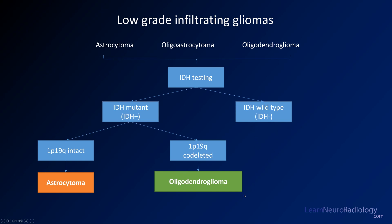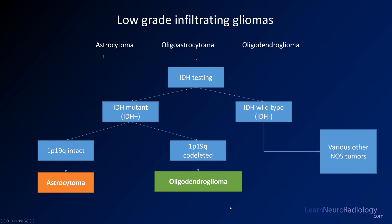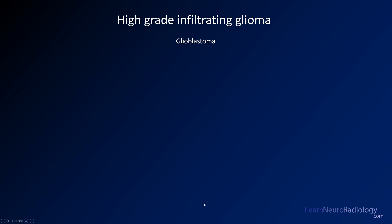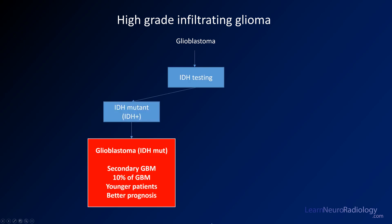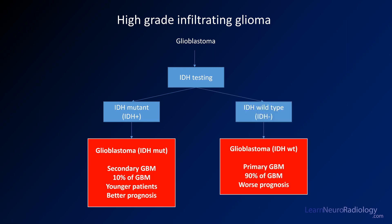For high-grade infiltrating gliomas — called glioblastoma (the 'multiforme' designation has been dropped) — you again go through IDH testing. IDH-mutant tumors are secondary GBMs, comprising only about 10% of GBMs; they tend to occur in younger patients and carry a better prognosis. IDH wild-type tumors are primary GBMs, about 90% of all GBMs, with a worse prognosis. The difference in median survival is roughly 30 months versus 15 months — approximately double.